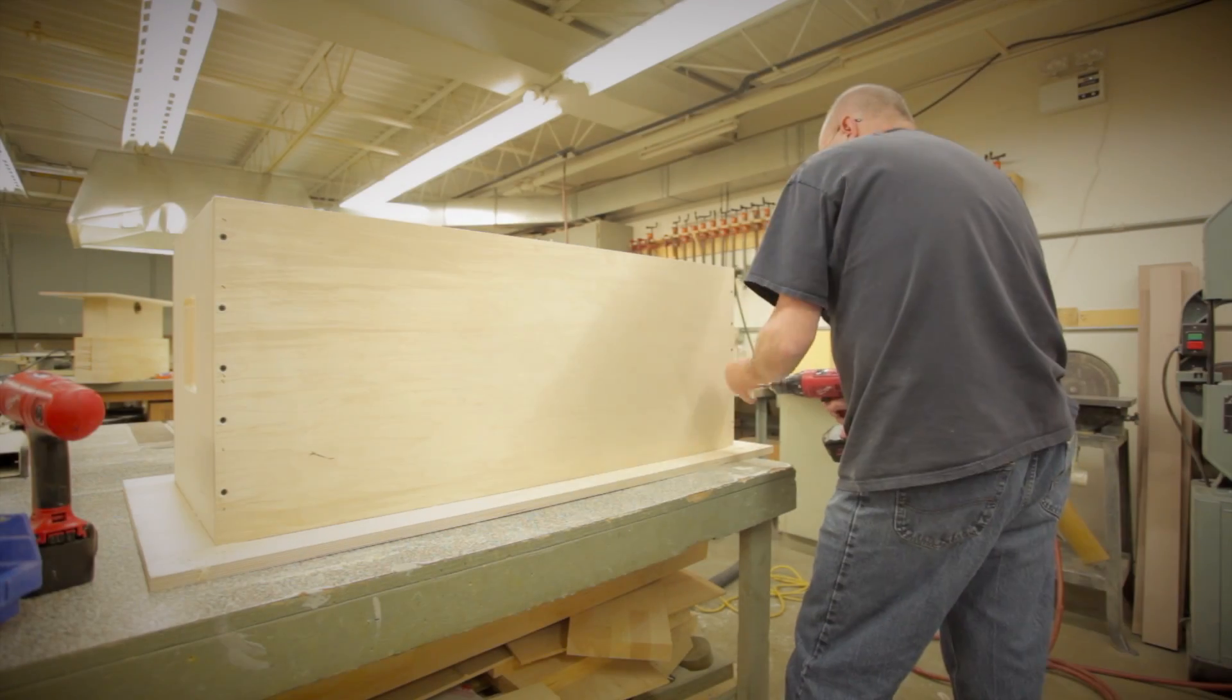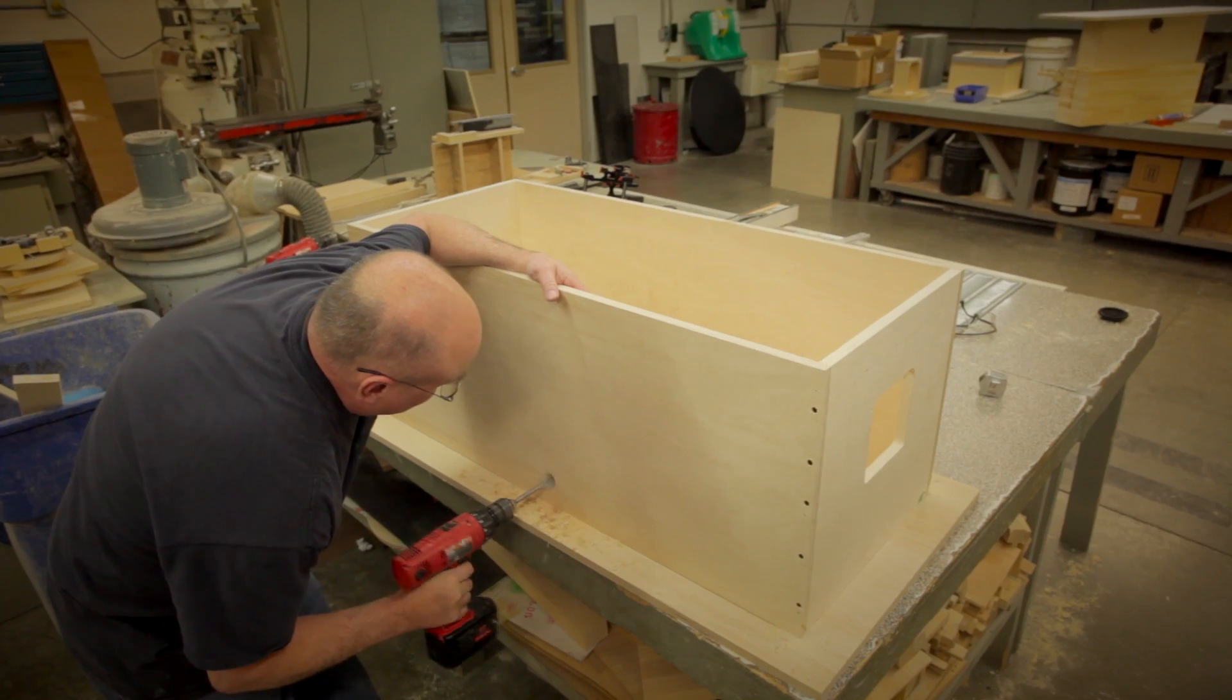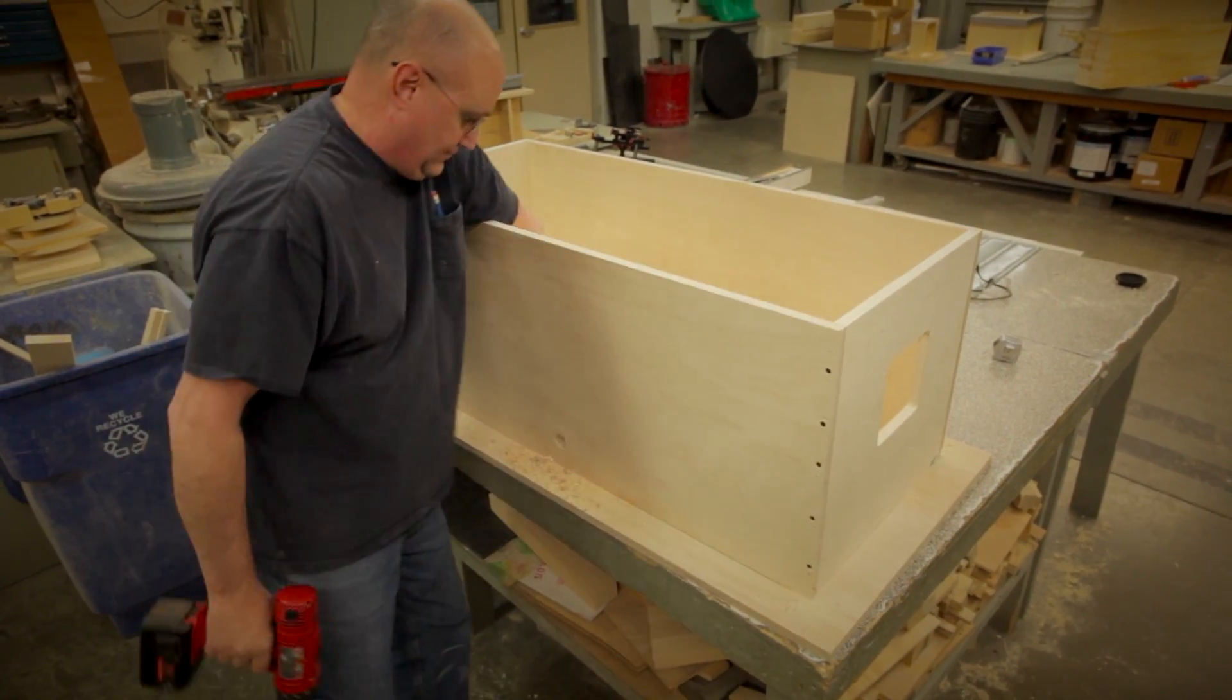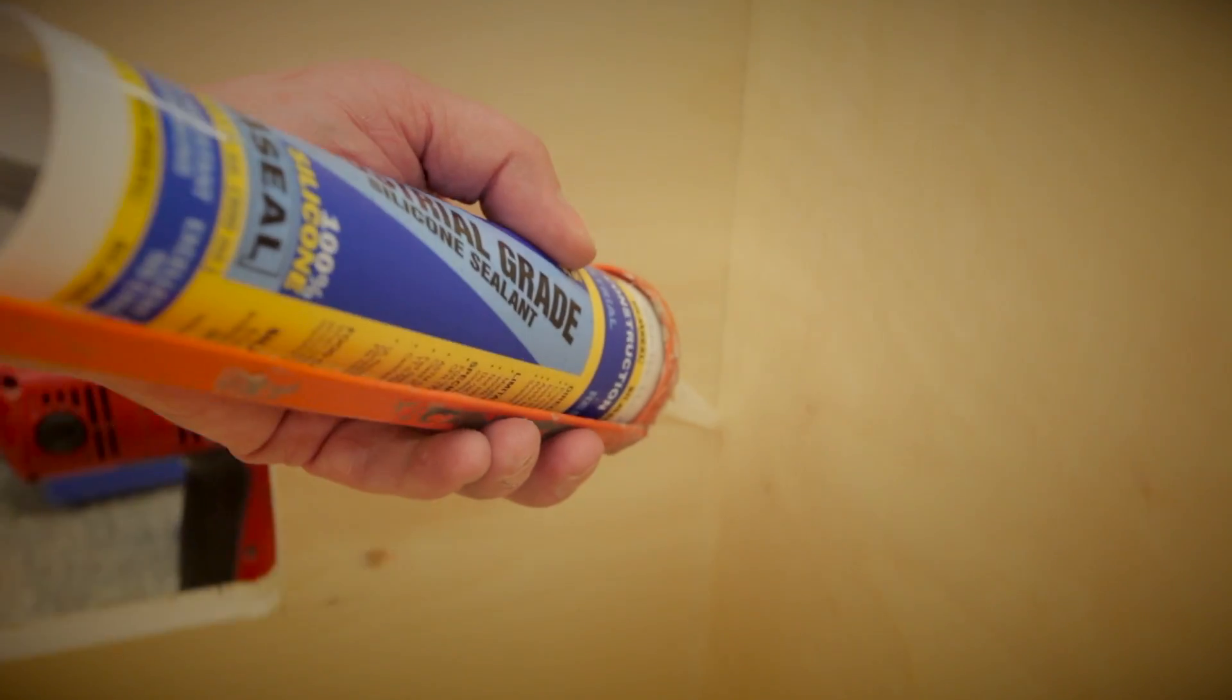While the mold is being machined, the draw box is constructed in our mold shop. This part design is considered a deep draw vacuum formed part, meaning the cross sectional area of the part is small compared to the depth of its overall shape.